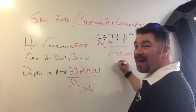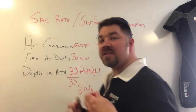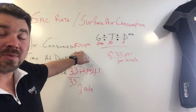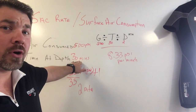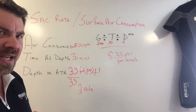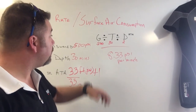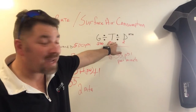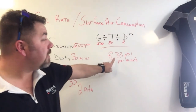That 8.33 is how much PSI a diver breathes per minute. Now, this is not you or me specifically — this is a theoretical diver. What I'm showing is that if a diver consumed 500 PSI over 30 minutes at an average depth of 33 feet of saltwater, which is 2 atmospheres of pressure, the SAC rate formula gives you PSI per minute breathed.